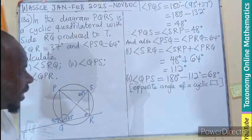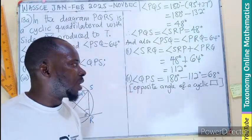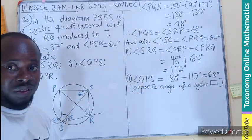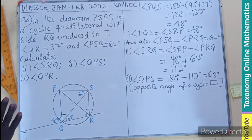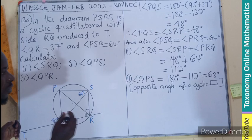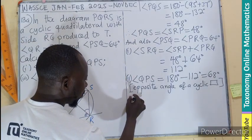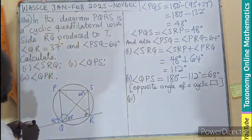This angle property is that the opposite angles of a cyclic quadrilateral are supplementary—they sum to 180°.